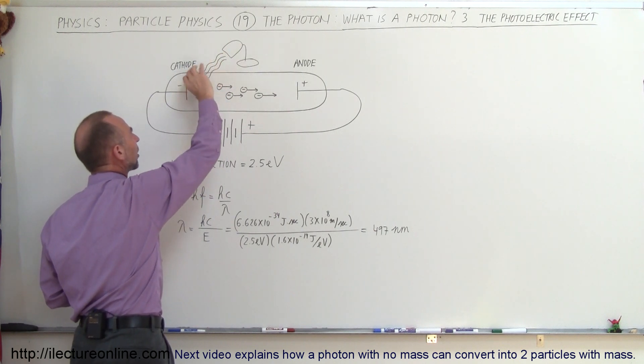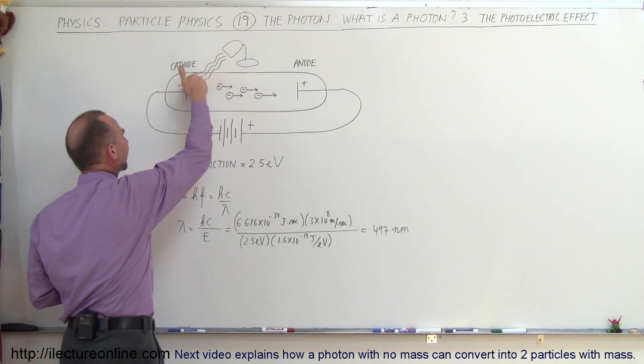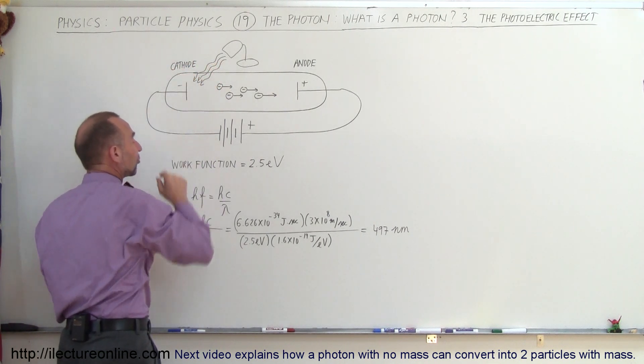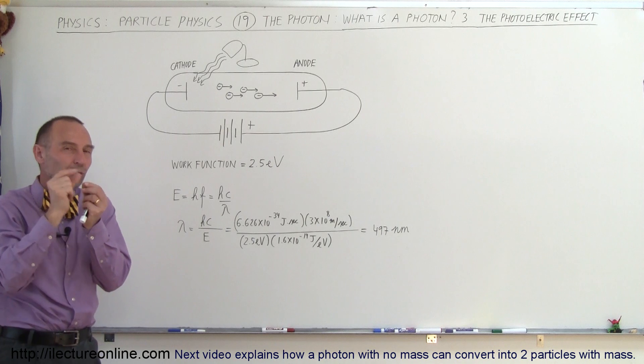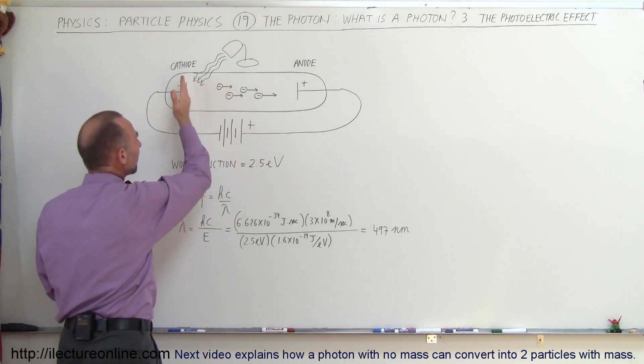would strike the cathode and set electrons free. Remember that electrons can absorb the energy of photons, so it would then set electrons free. Once they're set free from the metal, which is called overcoming the work function,